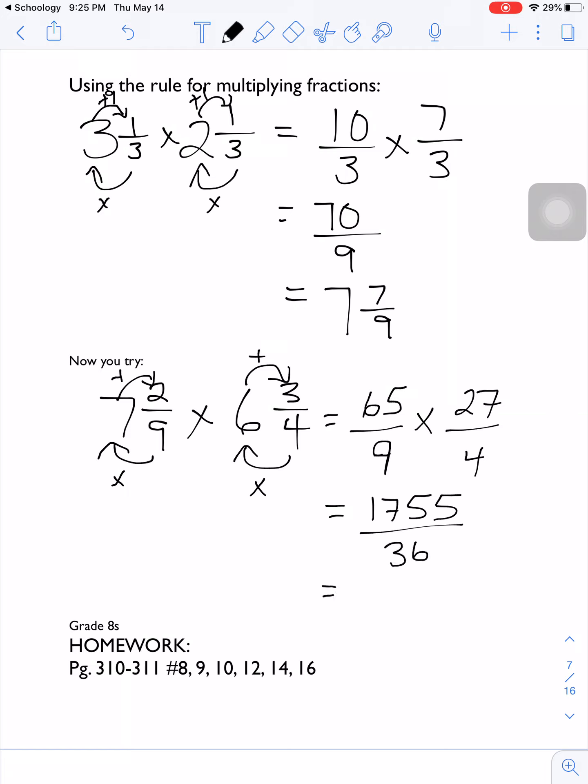So one last step to make sure this is back into mixed numbers. I take 1,755 divided by 36, I get 48 wholes. Now this one works out pretty easy because the decimal is 0.75, and we should recognize 0.75 as being 3/4. So my answer to that question is 48 and 3/4.